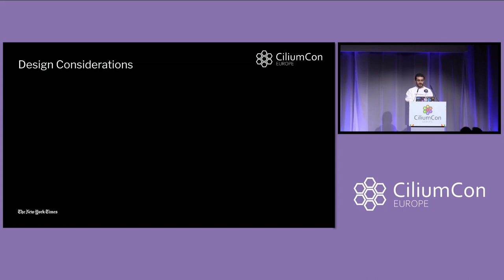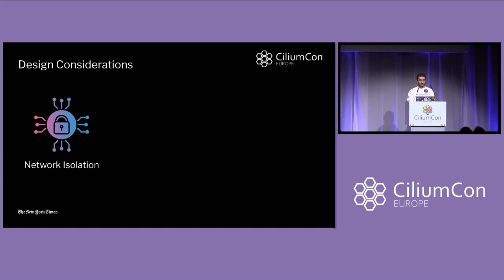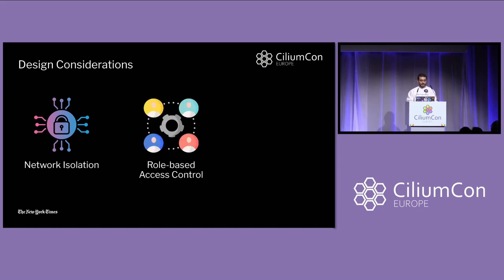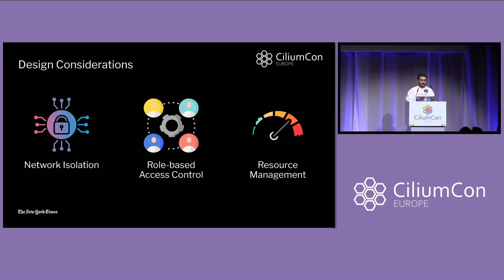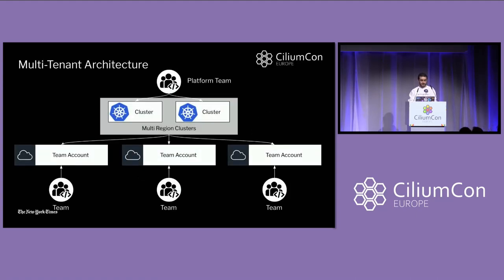We started to look into the main design considerations for building our Kubernetes clusters. Since we already have isolated accounts by default, we began considering network isolation — it's crucial to ensure that each workload has boundaries from other services so we don't cross those boundaries unless explicitly defined. By default, all communication between services is denied. Another factor was role-based access control, so when a tenant is onboarded to a multi-tenant cluster, they don't gain access to resources they don't own. And last, resource management — important for cost optimization and ensuring everything runs efficiently.